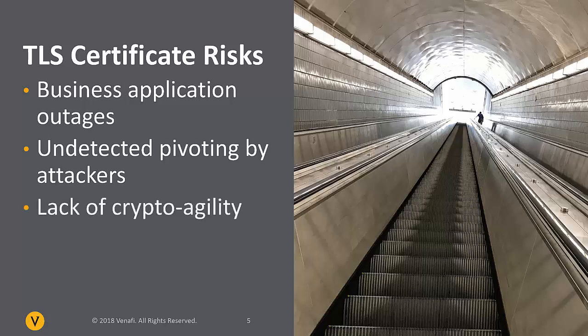The broad numbers of TLS certificates being deployed across organizational networks all rely on cryptographic algorithms and libraries to function. If a vulnerability is found in one of those algorithms or a bug is found in a cryptographic library that's leveraged to implement that algorithm, it's necessary to change large numbers of certificates quickly. Many organizations don't have this ability — they lack what's called crypto agility. Consequently, if an algorithm is found to be weak, they don't have the ability to quickly change to a stronger algorithm.